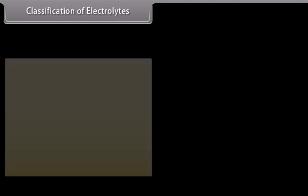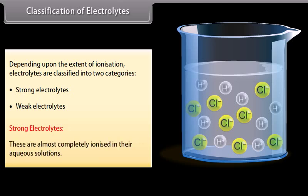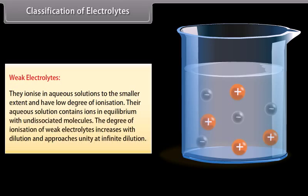Classification of electrolytes: Depending on the extent of ionization, electrolytes are classified into strong electrolytes and weak electrolytes. Strong electrolytes are almost completely ionized in their aqueous solutions, for example HCl, NaOH, and KCl. Weak electrolytes ionize in aqueous solutions to a smaller extent and have a low degree of ionization; their solutions contain ions in equilibrium with undissociated molecules. The degree of ionization of weak electrolytes increases with dilution and approaches unity at infinite dilution, for example NH4OH and CH3COOH.